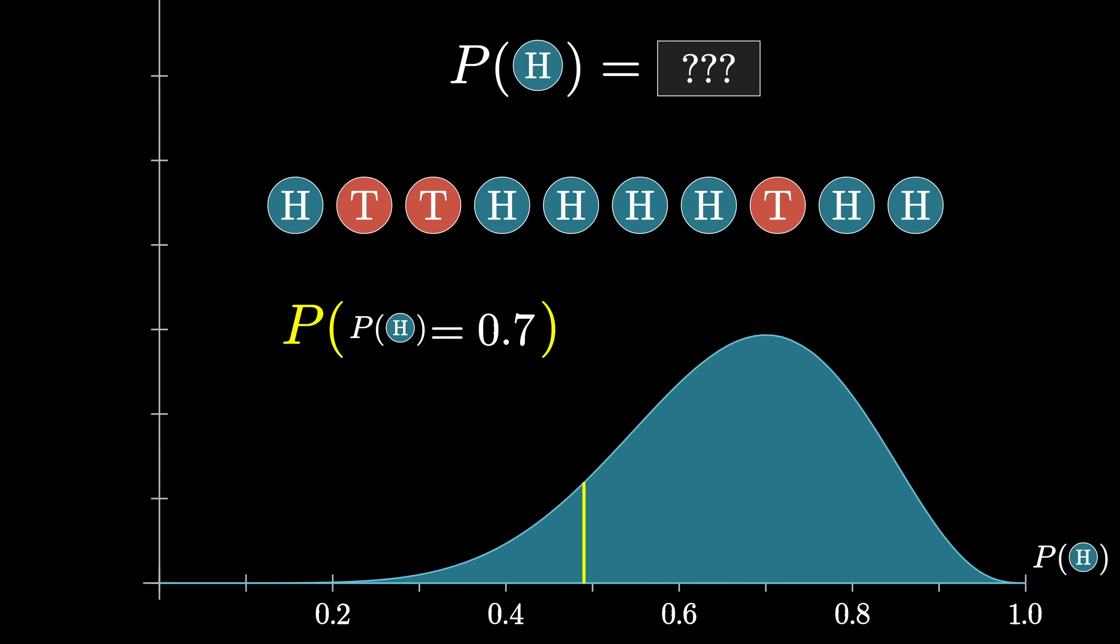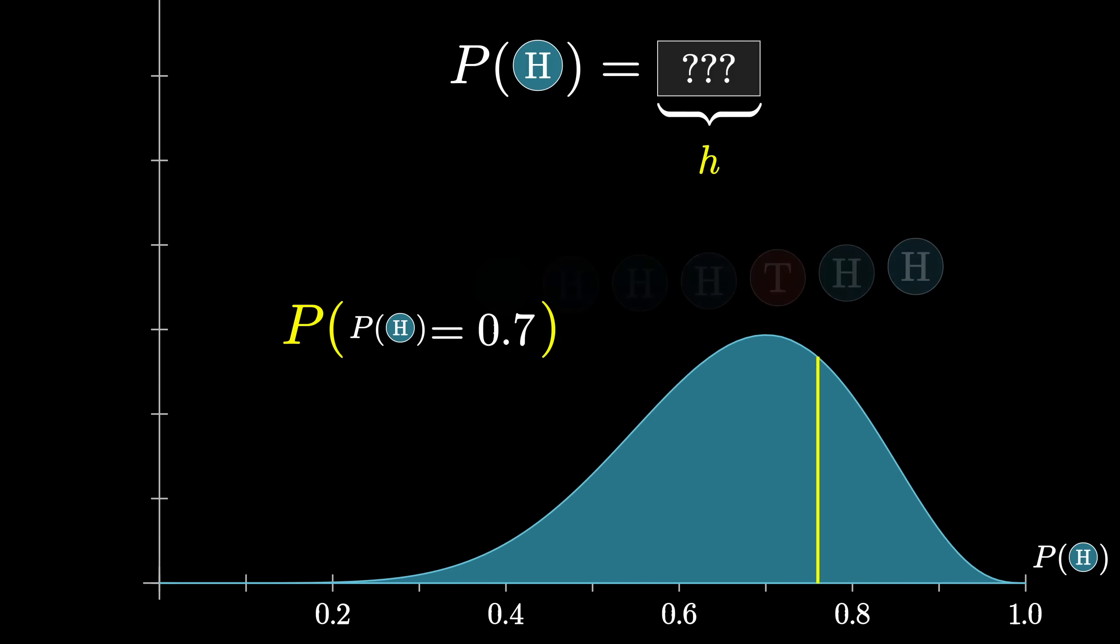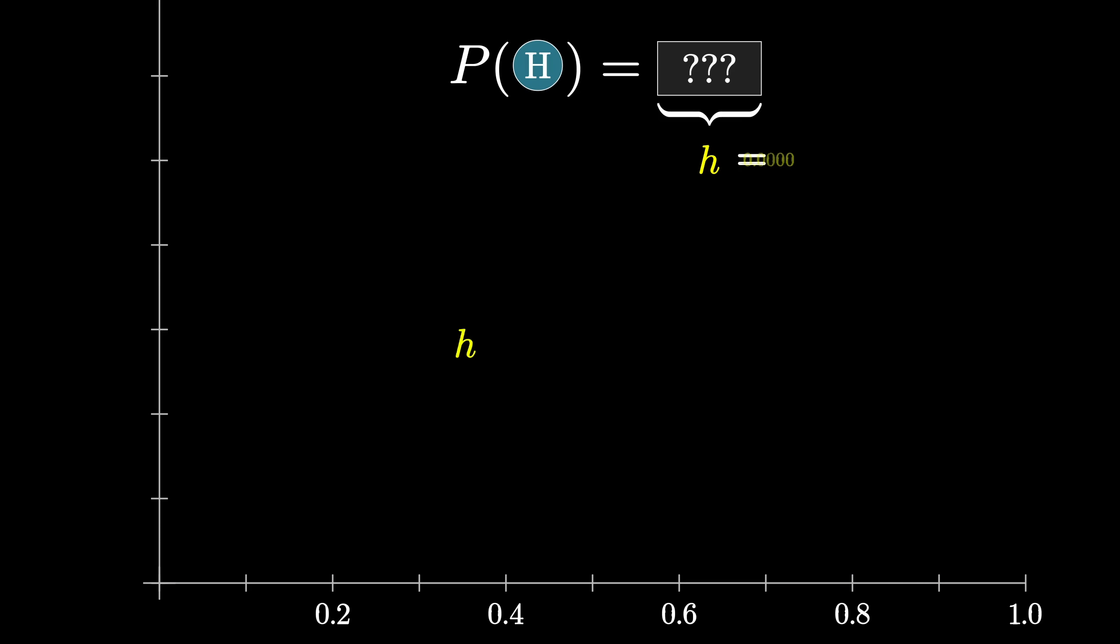But the more pressing weirdness comes from asking about probabilities in the setting of continuous values. Let's give this unknown probability of flipping heads some kind of name, like H. Keep in mind that H could be any real number from 0 up to 1, ranging from a coin that always flips tails up to one that always flips heads, and everything in between.